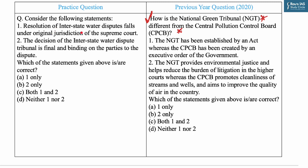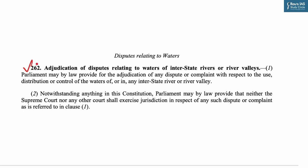Today's practice MCQ says: 'Consider the following statements.' Statement one says: 'Resolution of interstate water disputes falls under the original jurisdiction of the Supreme Court.' This statement is incorrect. Article 262 of the Constitution says Parliament may by law provide for the adjudication of any dispute with respect to the use, distribution or control of the waters of any interstate river or river valley. Sub-clause 2 says Parliament may by law provide that neither the Supreme Court nor any other court shall exercise jurisdiction in respect of any such dispute.